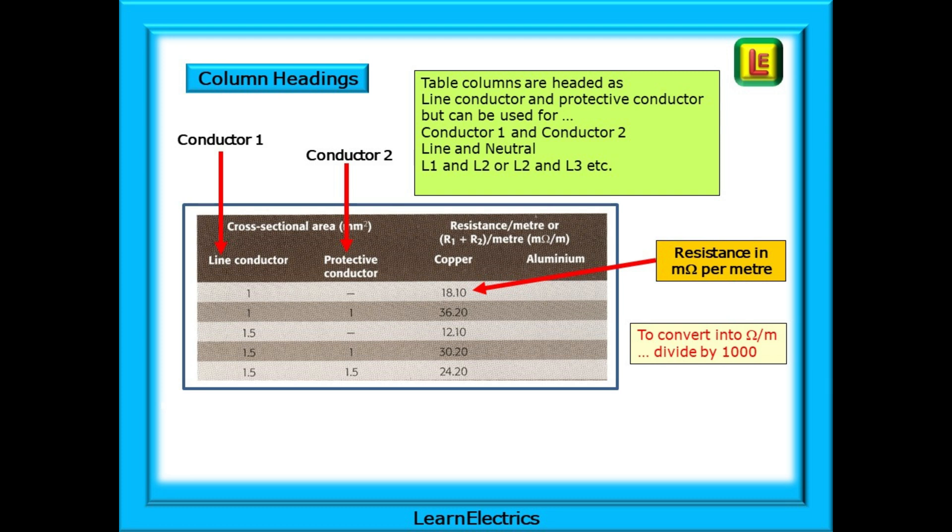Why milli-ohms? In ohms there would be lots of zeros to manipulate but this way we have non-zero numbers which are easier for our eyes to understand. To convert milli-ohms into ohms simply divide by 1000.